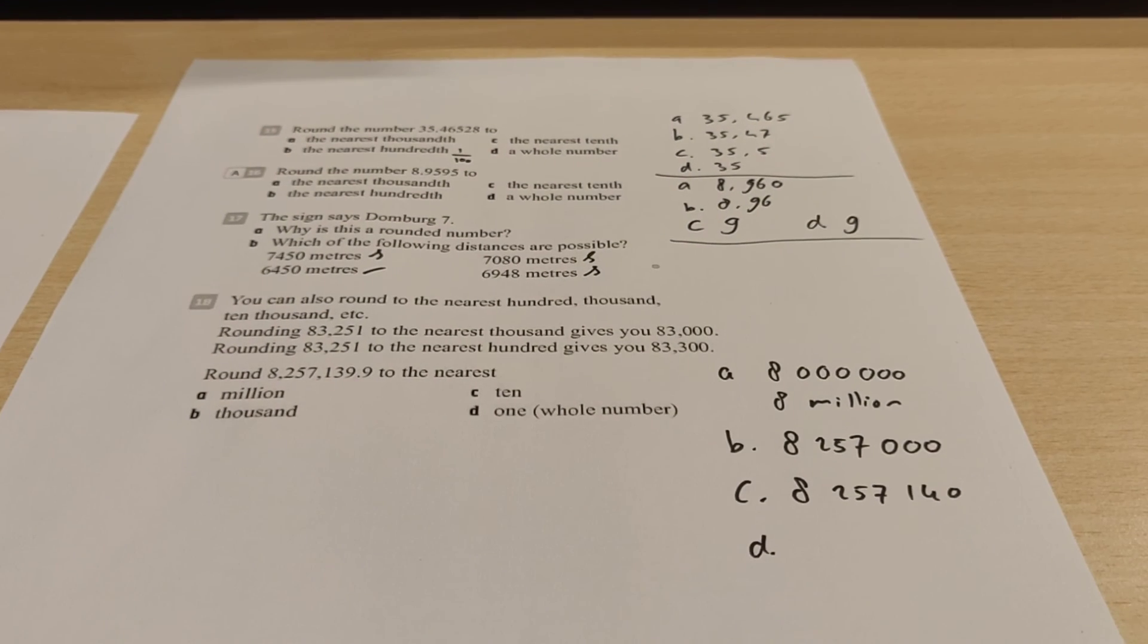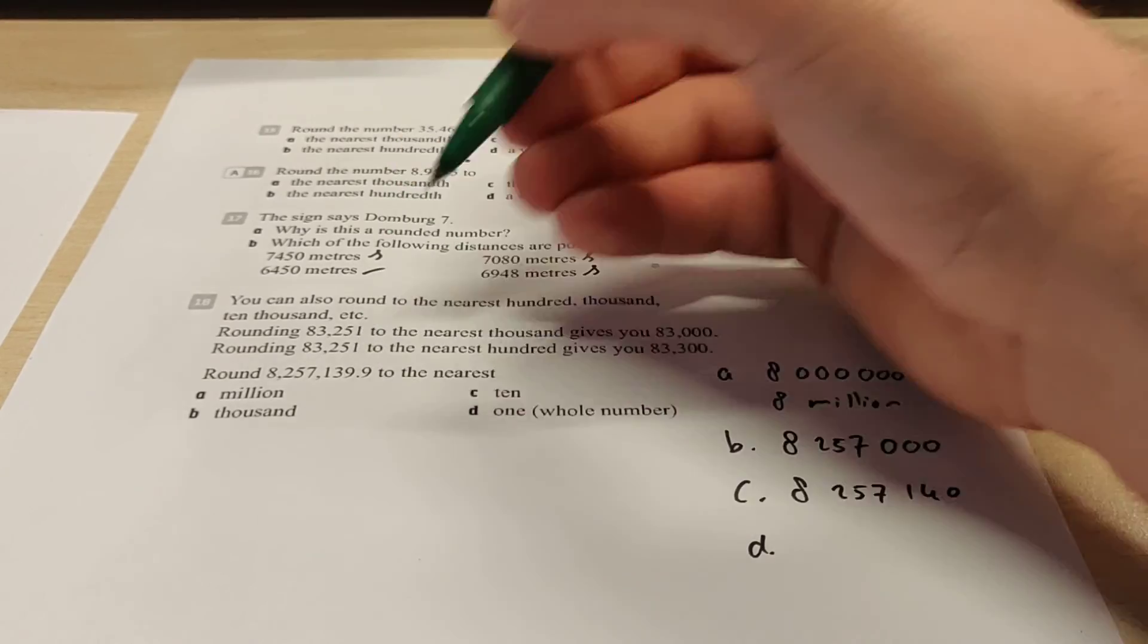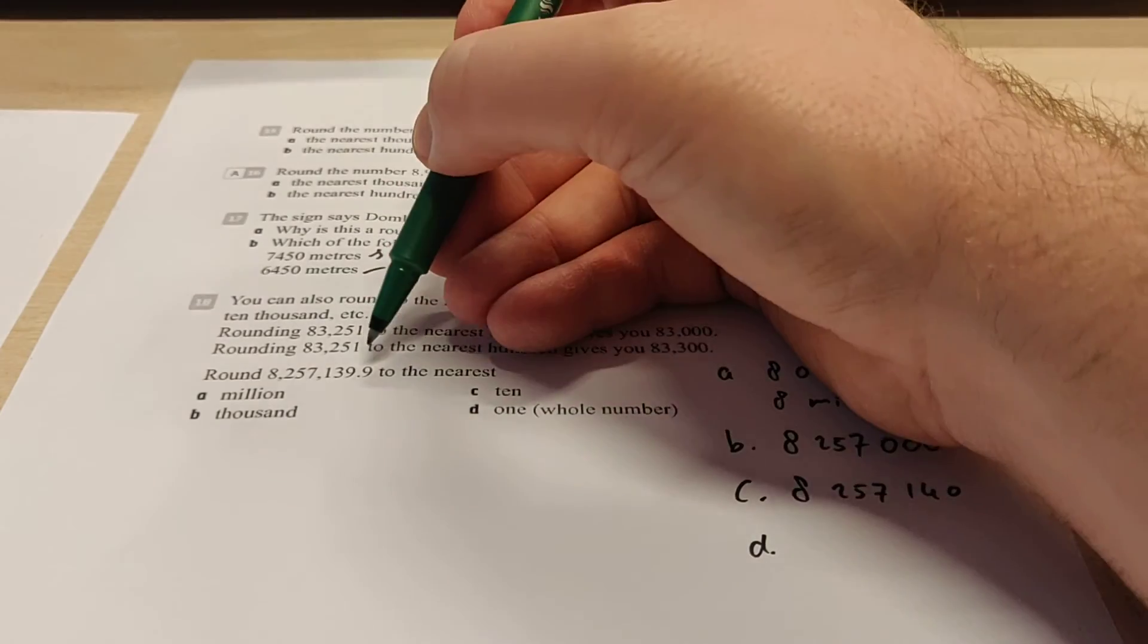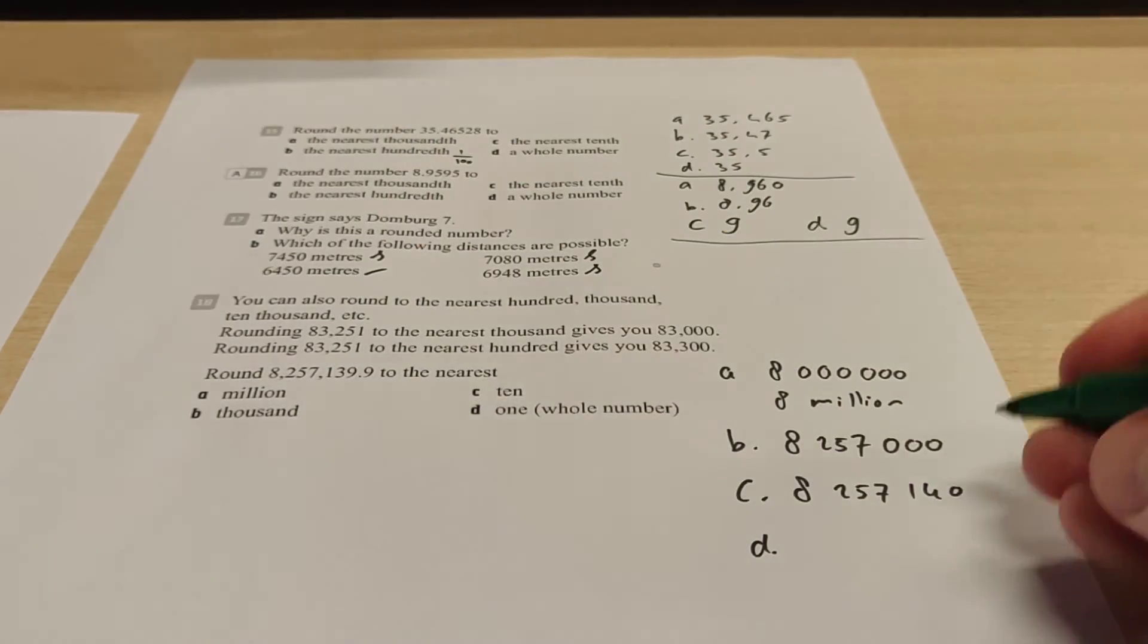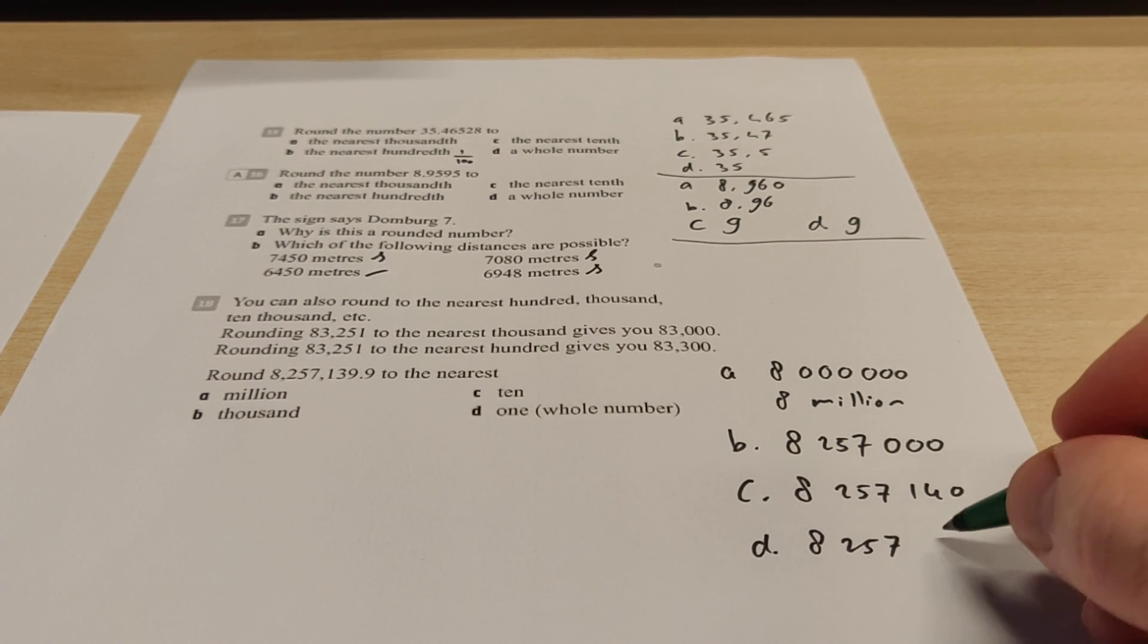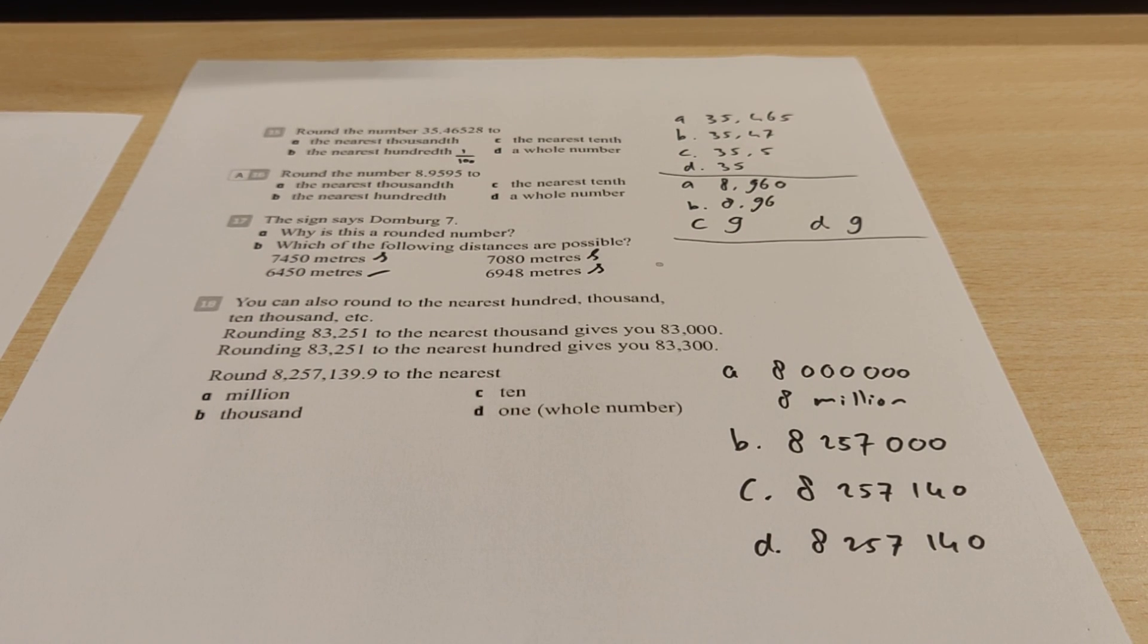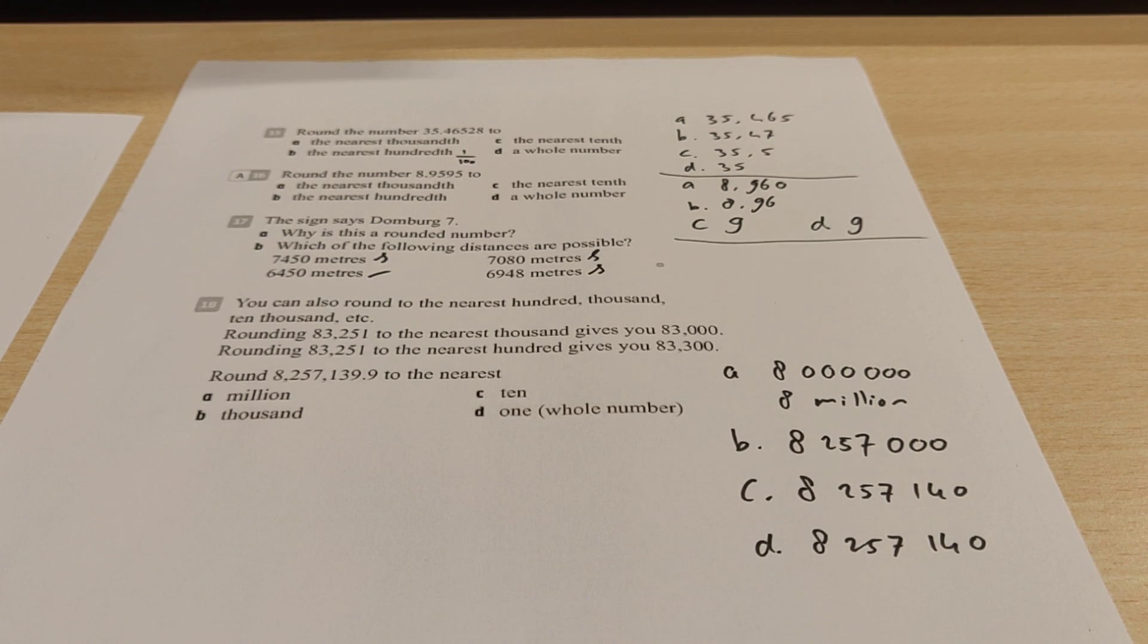And then question D. We have to round off to the nearest one. That means just the whole number. So we don't want to have this 0.9. We don't want to have that. Well, you can see it's already very close to 140 here. So the answer is also 8,257,140. So these are the answers for exercise 15 till 18. Hopefully that makes it a bit more clear. If you have any other questions, please let me know.